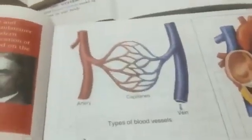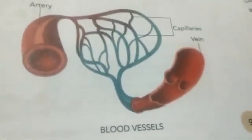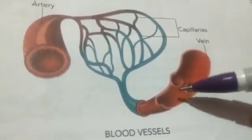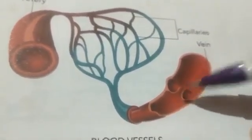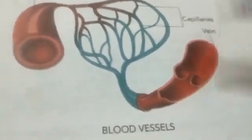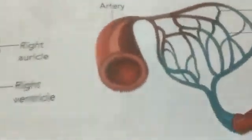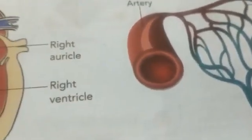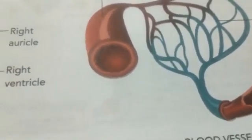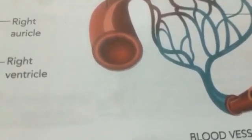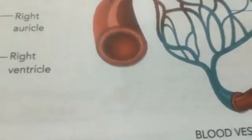Veins also have three layers, but the difference between an artery and a vein is that blood flows at very low pressure in veins, so they have a thin layer rather than a thick one like arteries. Veins also have a door-like valve that prevents the backward flow of blood. Veins carry impure blood from the body to the heart except the pulmonary vein, and blood flows here under very low pressure.